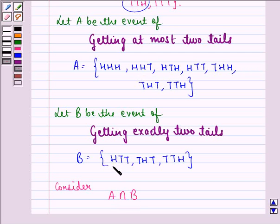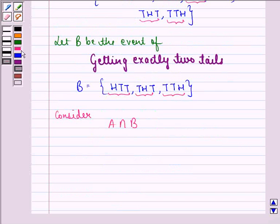So the elements common to A and B is, here we see we have HTT, here also we have HTT. We have THT, here also we have THT, and we have TTH, here also we have TTH. So we see that A intersection B is not equal to phi. We have 3 elements in this.